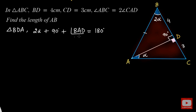We will keep BAD as it is and take 2 alpha plus 90 to the other side, so that we get angle BAD equal to 180 minus 90 minus 2 alpha. From here, we get angle BAD equal to 90 minus 2 alpha. Which means the measure of this angle over here, that is angle BAD, is 90 minus 2 alpha.